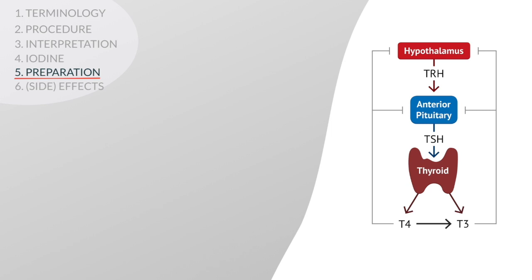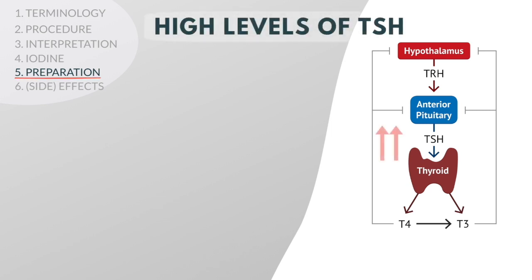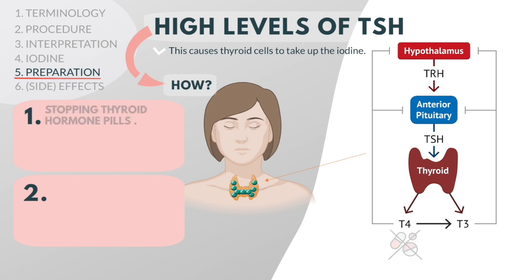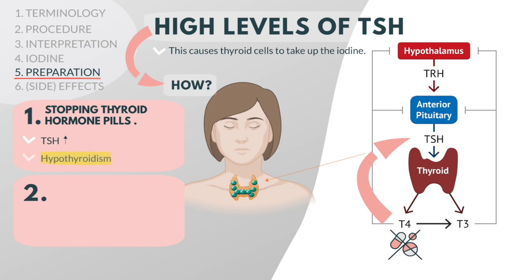The therapy is most effective if you have high blood levels of TSH, which causes thyroid cells — including thyroid cancer cells — to take up the iodine. This can be done in one of two ways. The first is by stopping thyroid hormone pills for three to six weeks, which causes high levels of TSH to be produced naturally. This results in hypothyroidism, which may involve symptoms such as fatigue, cold intolerance, and others. To minimize those symptoms, you can prescribe T3.